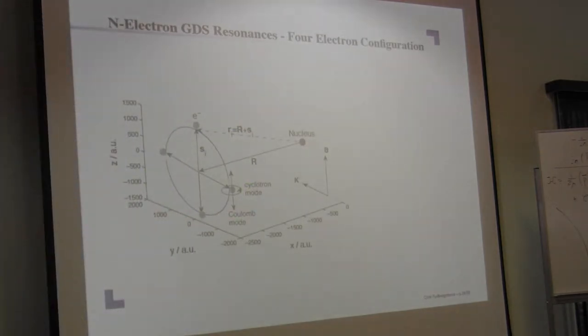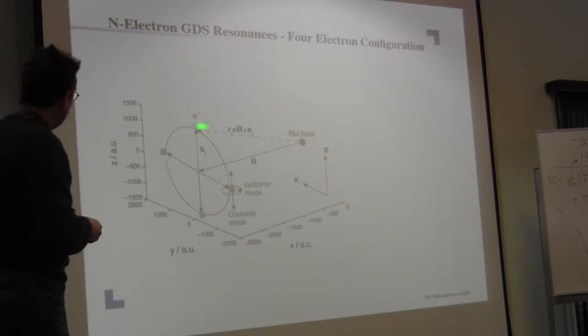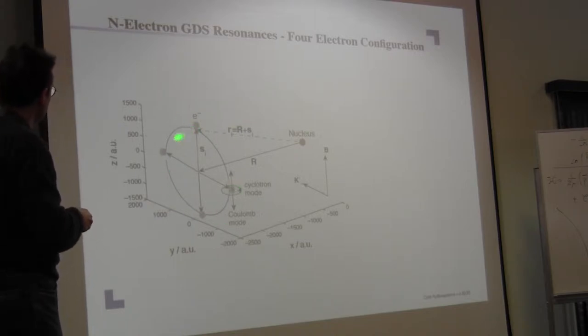This is the picture how things look like for example for four particles. Four electrons that are decent. They are again on a circle and they form this equilateral behavior here that is always the same distances between the particles.